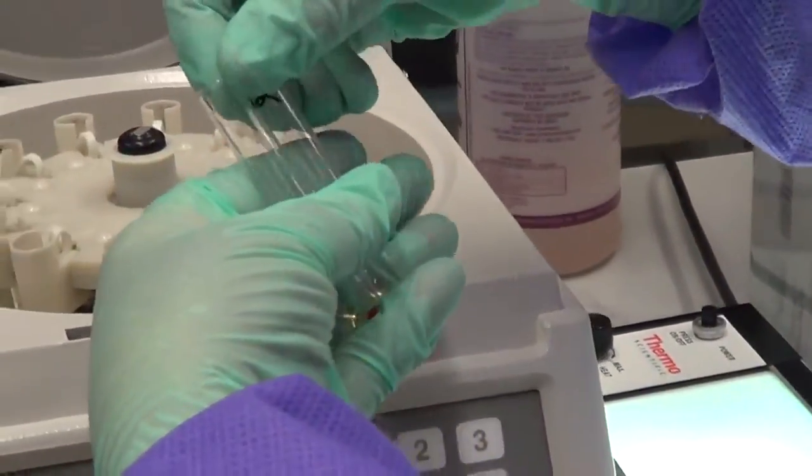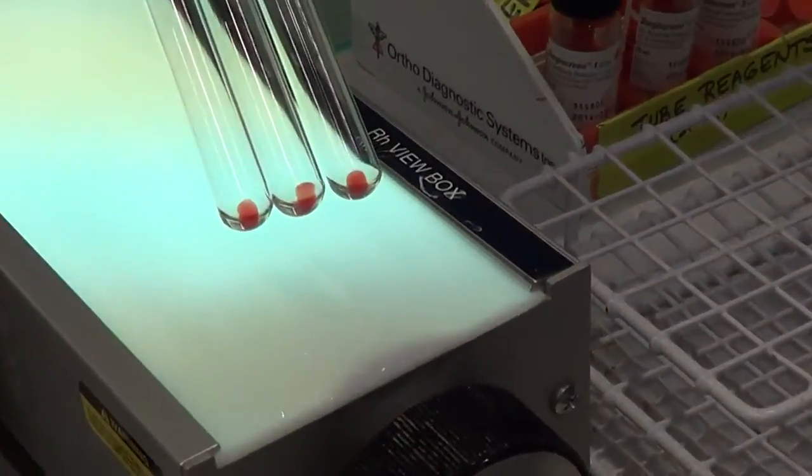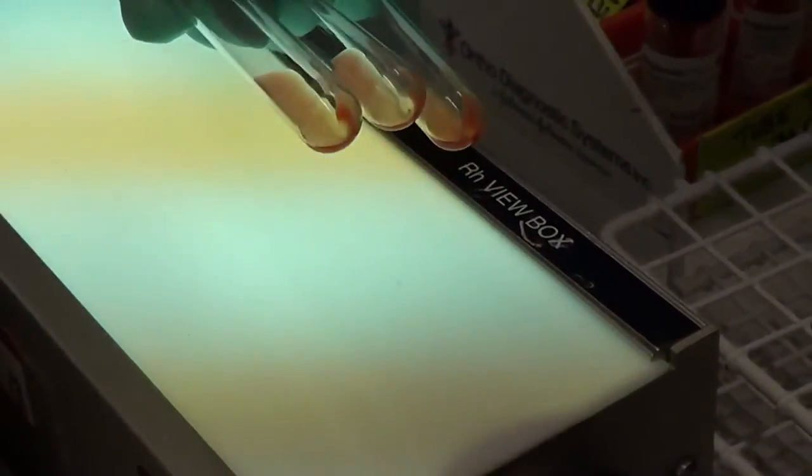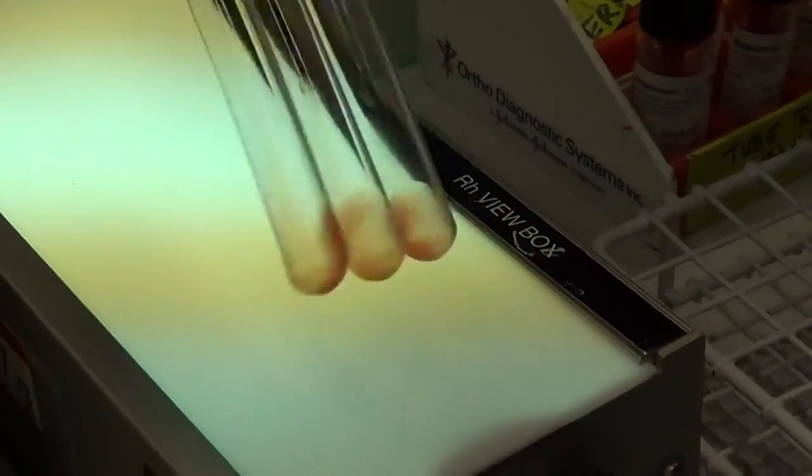You take your test tubes out of the centrifuge. You hold them over a lighted source and you're checking for agglutination. At this phase of testing, you will detect mostly IgM antibodies.